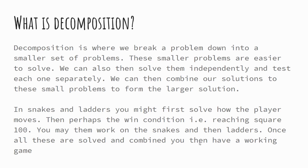Using Snakes and Ladders again as an example: you might first solve how the player moves — how you get the player to move through a sequence of numbers. Then you might consider your win condition, for example the player wins when they reach tile number 100. So we've got the movement, we've got the winning condition, and then you'd work on the snakes and the ladders. Once we solve all of these individual problems and combine them together, you'd have a working game. Decomposition is that idea of breaking the problem down into smaller component parts to make it easier to solve a much larger problem.